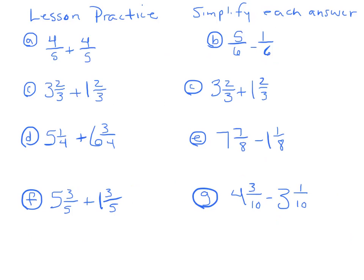So let's take a look at lesson practice. If we look at 4 fifths and we add 4 fifths, we're going to end up with 8 fifths. We need to simplify that. So we divide the 5 into 8. It goes in one time, and there's 3 left over. 3 what? 3 fifths.